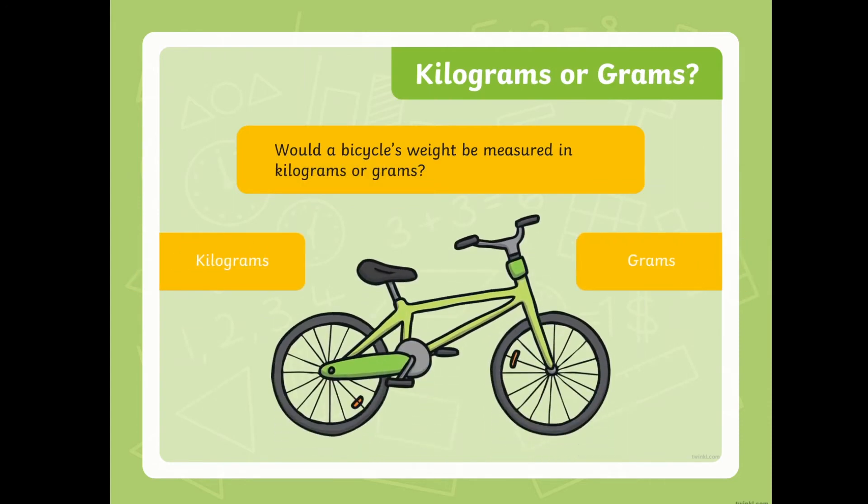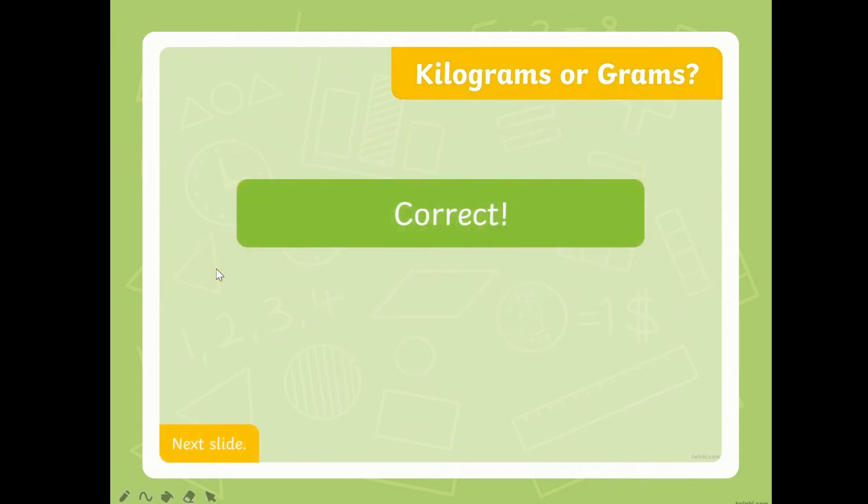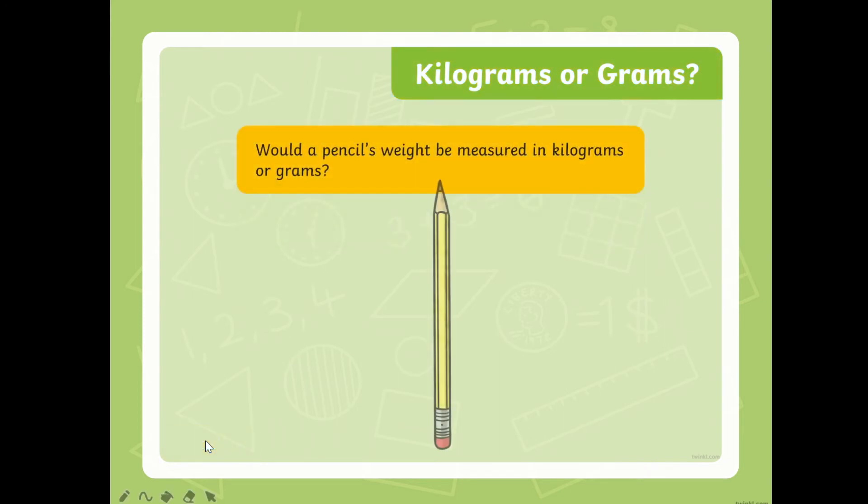You have to tell me if this object that I will be showing you can be measured using kilograms or grams. You can write down on your whiteboard kg or g. Would a bicycle's weight be measured in kilograms or grams? Very good. It's kilograms. How about the lion's weight? Good job. It's kilograms. Great job, gram.